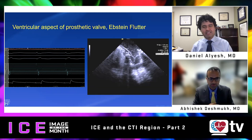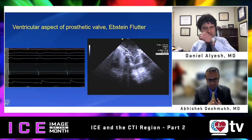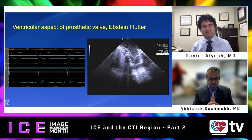Ablation at that atrial tissue resulted in bidirectional block in this patient. This case highlights the importance of understanding concepts of regional anatomy, biophysics of ablation, and intracardiac echo — all key for success in these more challenging ablations.